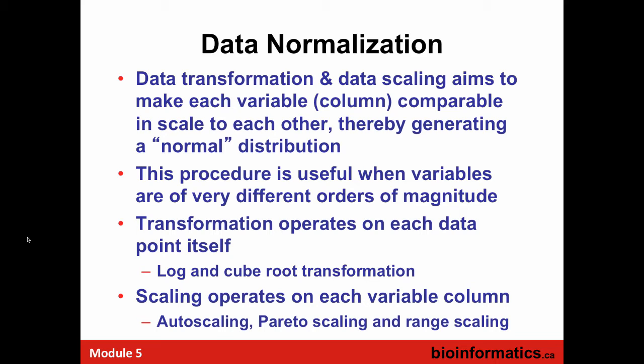Most things measured in living systems seem to follow normal distributions, but sometimes they don't. In some cases, it's possible to convert an abnormal distribution into a normal one using things like log transformations or cube root transformations. That's especially useful when we've got things measured over many orders of magnitude, which can often happen with metabolites. Then the scaling — autoscaling, range scaling, Pareto scaling — Jeff talked a little bit about those already.